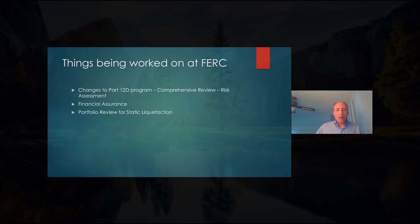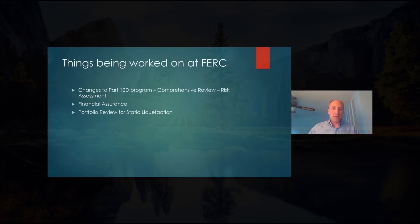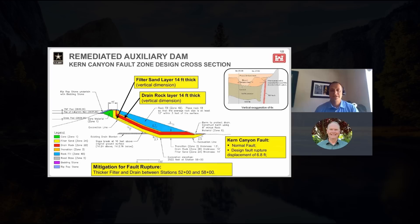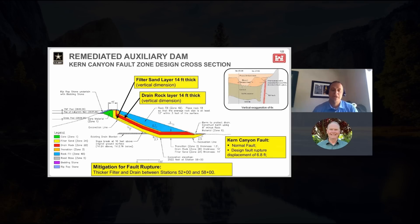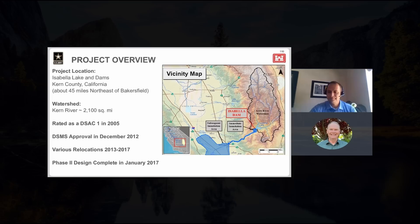We are now requiring these comprehensive reviews, more in line with what's done at the Bureau and the Corps, as far as doing the deep dive every other Part 12 cycle, so on a 10-year basis. This is just a typical section over the fault zone. Its maximum thickness is essentially over a 600-foot wide zone of the fault. We've designed the auxiliary dam and now constructed the features done in this reach to have a 14-foot thick filter in the vertical direction as well as the companion. The dam itself is about 2,500 feet.